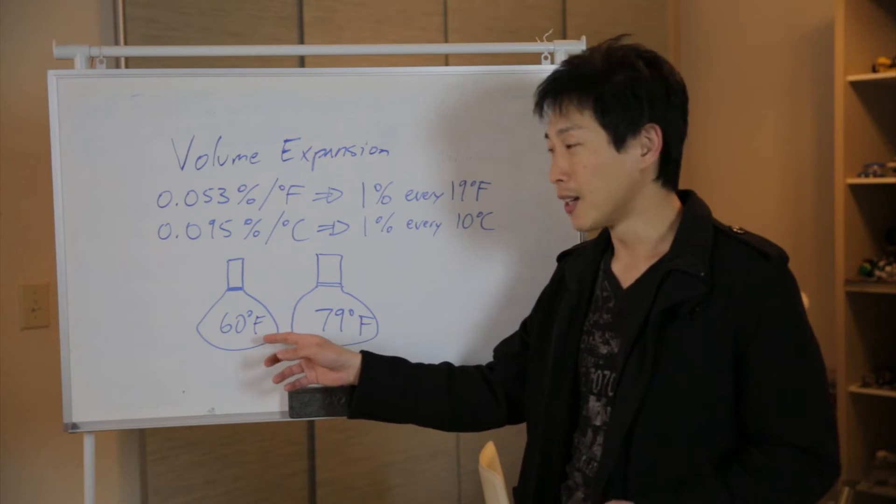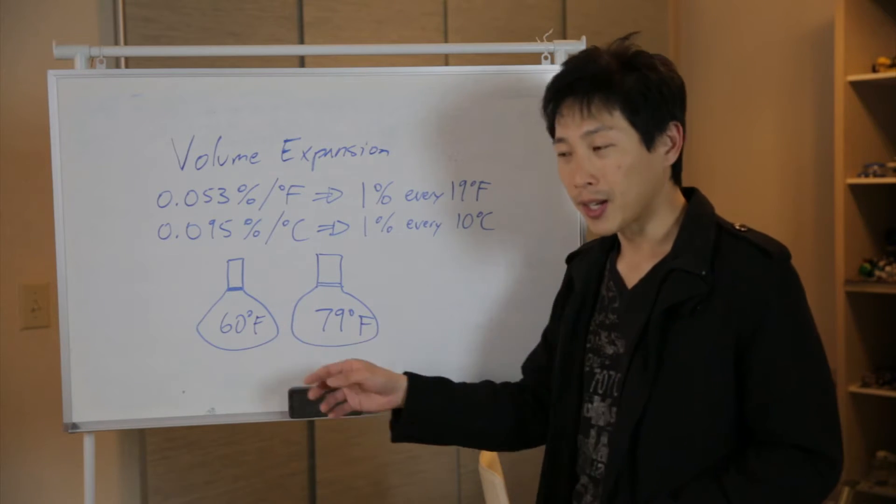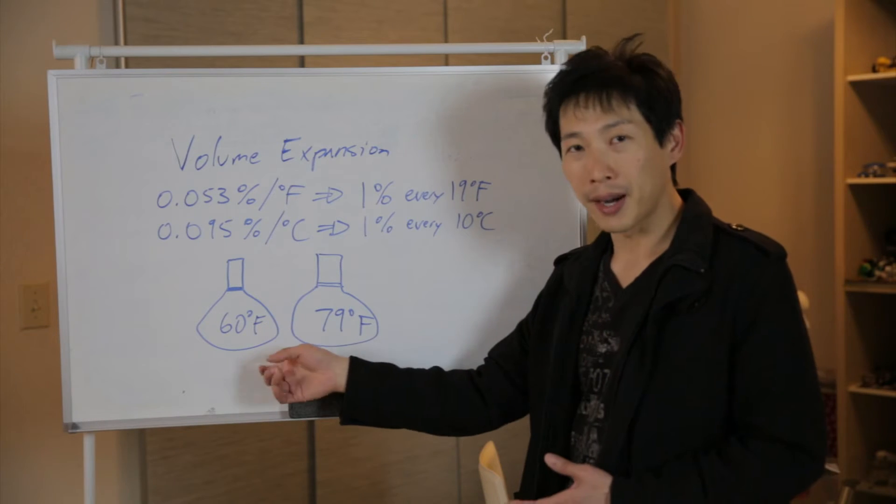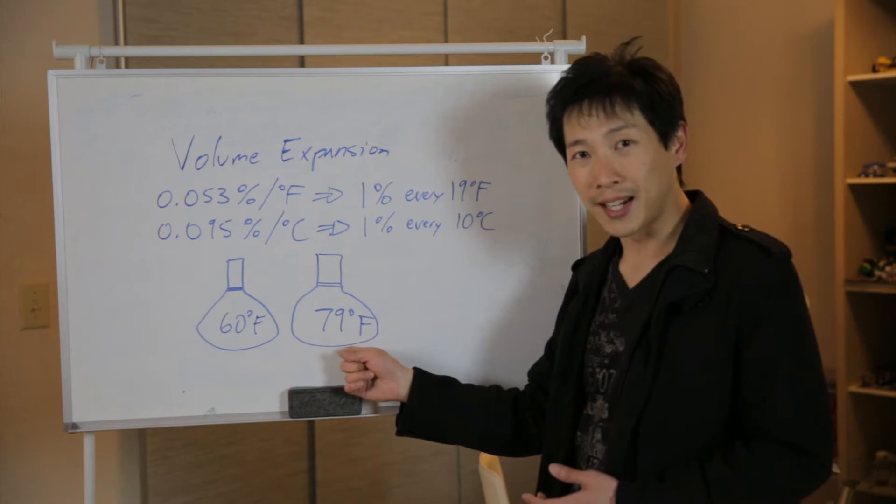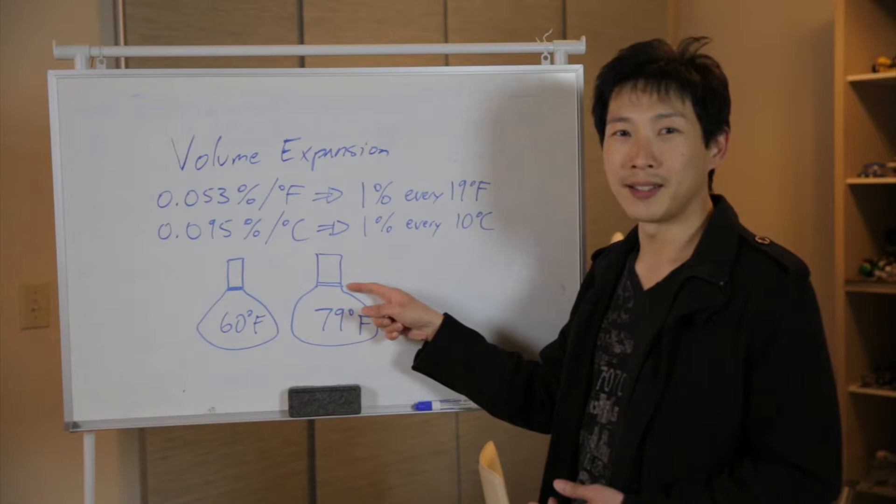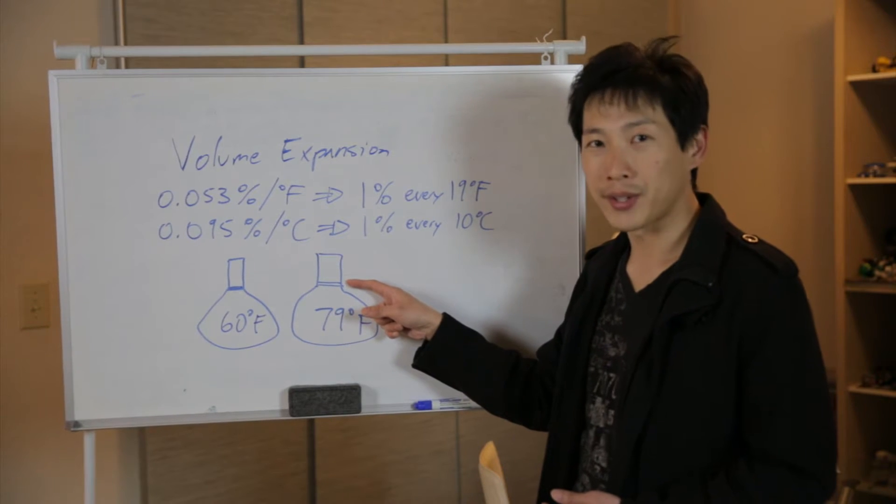This translates to about 1% every 19 degrees Fahrenheit and 1% every 10 degrees Celsius. To visualize this, you can have a beaker of gasoline at 60 degrees Fahrenheit, and if you heat it up the same amount to 79 degrees, it would increase by a little smidgen, just 1% more.